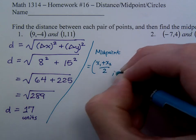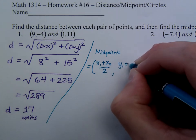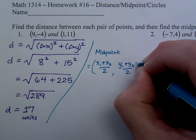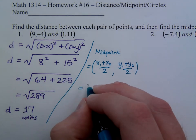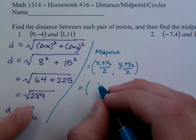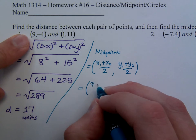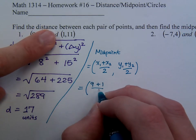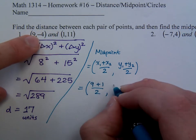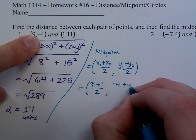It's the average of the x-coordinates and the average of the y-coordinates. So when I look at this, this is 9 plus 1 over 2, and this is negative 4 plus 11 over 2.